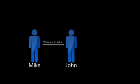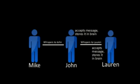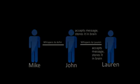Here's Mike again. Mike's our server, so he wants to tell his information to someone else. Here's John — John's our client. John is going to accept what Mike is telling him and pass it on to his buddy Lauren, who is also a client. This same process will occur until all of Mike's friends, or the switches in the network, have the same information.